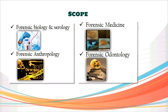Next is forensic anthropology. This is an important branch where we study personal identification, especially in cases of decomposed bodies. It is very hard to determine the person, so for that we do body measurements, especially the skeletal remains. The persons who interpret in this way are called physical anthropologists. Age and stature measurements help us in actually identifying the person.